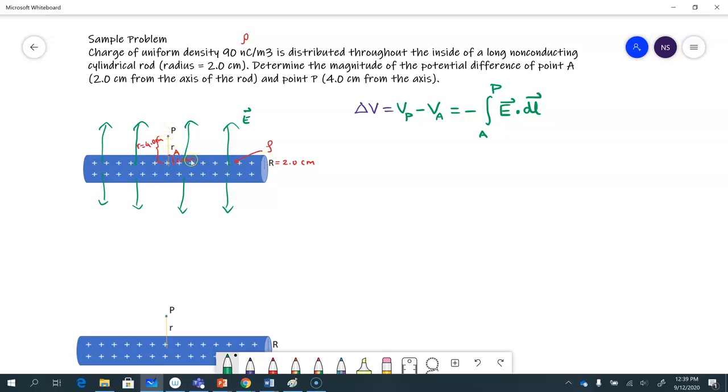So when I look at this problem, immediately in my mind, I have Gauss's law in my mind that would give me the electric field. Electric field would be radially outwards in all different directions. And I also remember that potential will drop in the direction of the electric field. So A will be at a higher potential compared to P.